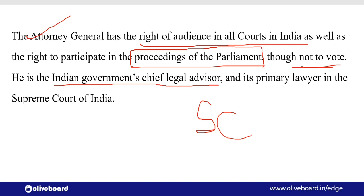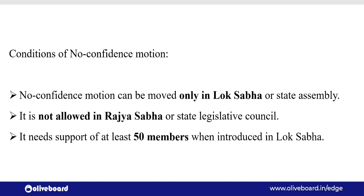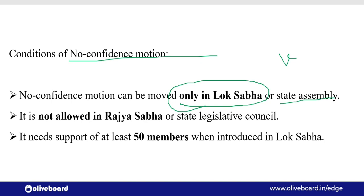A no confidence motion against the union government can be initiated in which of the following? अविश्वास प्रस्ताव जो होता है केंद्र सरकार के खिलाफ, वो initiate किया जा सकता है सिर्फ Lok Sabha में। No confidence motion can be moved only in Lok Sabha, और अगर राज्य में होता है तो सिर्फ Vidhan Sabha में — Vidhan Parishad में यह नहीं move हो सकता। It is not allowed in Rajya Sabha और State Legislative Council.